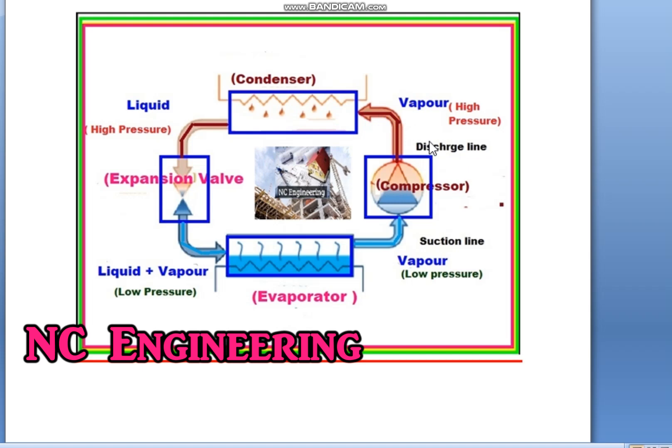Air-cooled condensers come in two types. For very small applications we use natural air — like a refrigerator — where the condenser has only coils and is cooled by natural air. Whereas for air conditioners and chillers, we have a blower to blow the heat through the coils. Inside the condenser, the refrigerant enters as high pressure vapor, gives out its heat to the surrounding, and comes out as high pressure liquid.